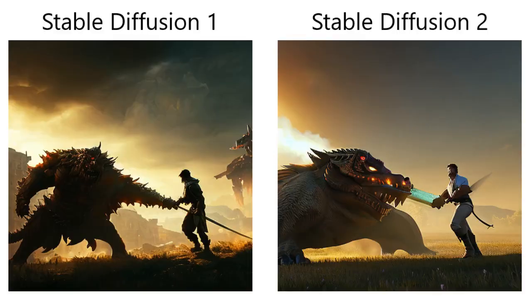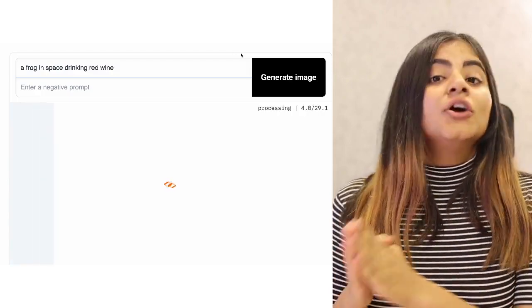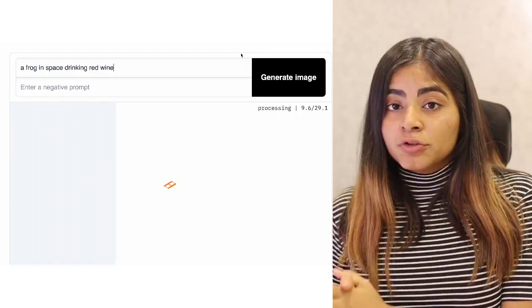In this series, we are going to be breaking down complex concepts for you in simple terms and easy to understand explanations. All the things that you've heard about stable diffusion and DALI, wherein you're converting text to an image, is an implementation of diffusion models.